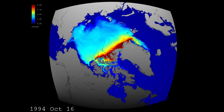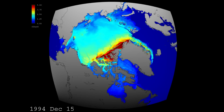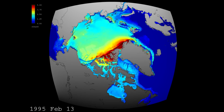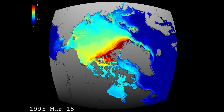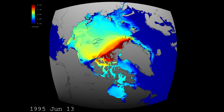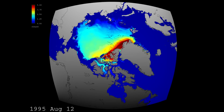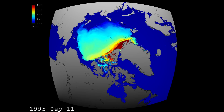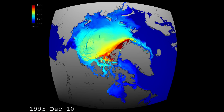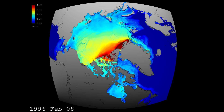As you follow the animation, a couple of striking things stand out. We see an increase and decrease in Arctic ice cover from season to season. In late winter, most of the Arctic is covered with sea ice. With the arrival of spring, the ice cover shrinks until it reaches a minimum extent, which is usually sometime in September.